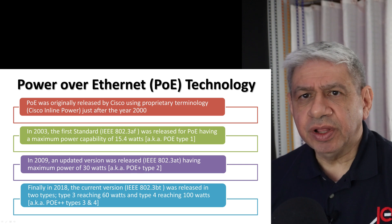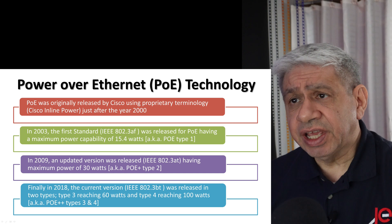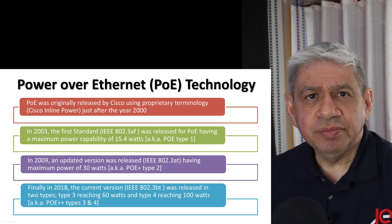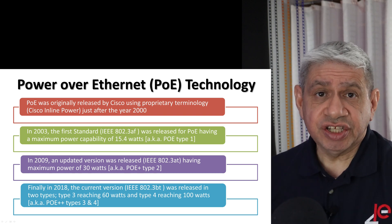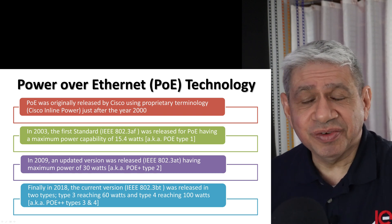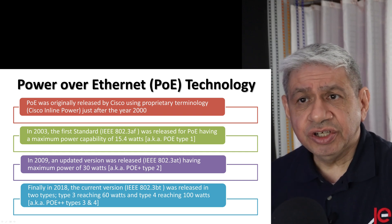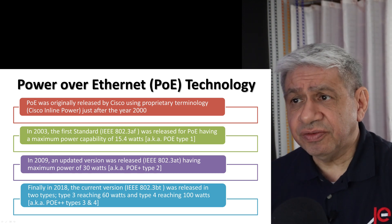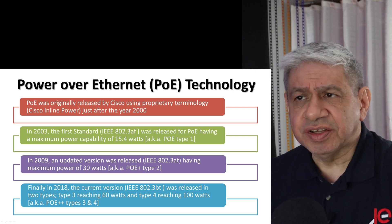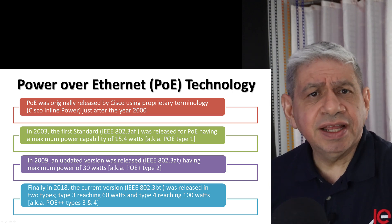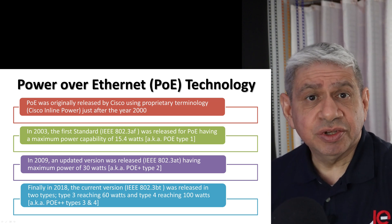What they came up with was the idea of using unused wires in the regular Ethernet cable. The original 100 megabit Ethernet was only using four of the eight wires. They used the additional four wires that were not being used to generate a small amount of power, sent out to devices like video cameras and parts of security systems — there was a high demand for that back then.